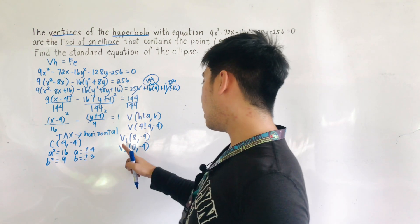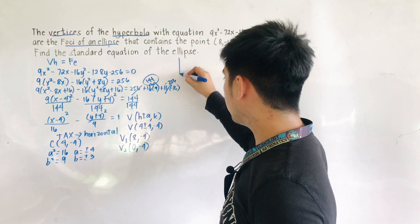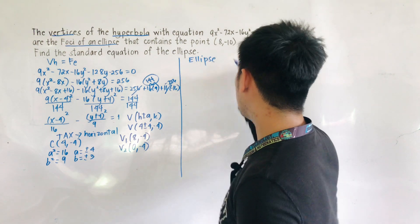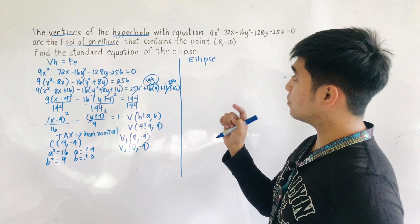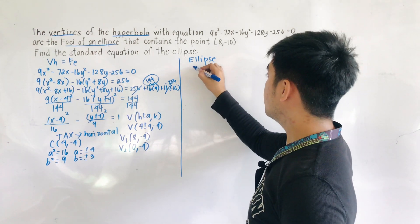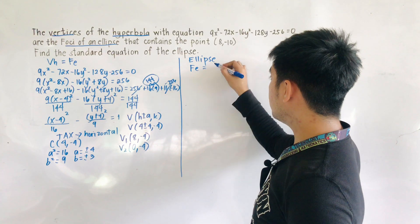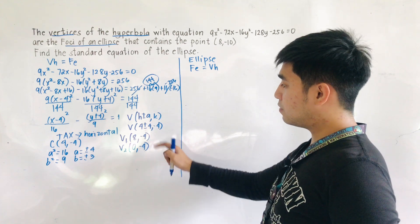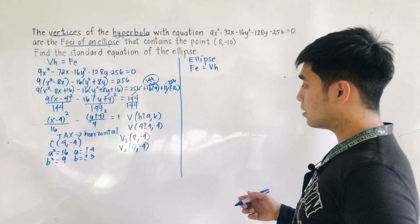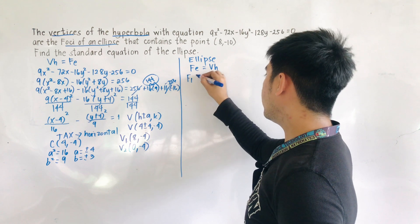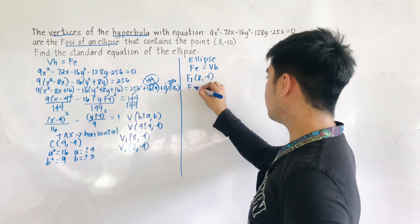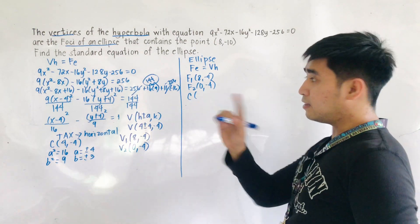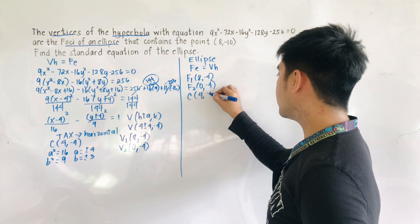Since we now have V1 and V2, let's go to the equation of the ellipse. The condition is: the vertices of the hyperbola are the foci of the ellipse. Therefore, the foci of the ellipse equal the vertices of the hyperbola — F1 is (8, negative 4) and F2 is (0, negative 4). Also note that we have the same center, located at (4, negative 4).